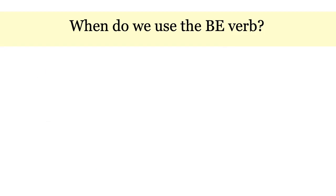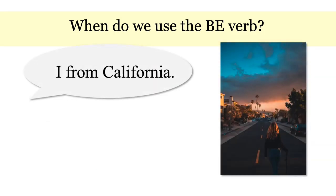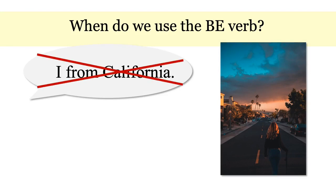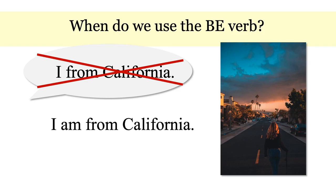Here's one more example. Can you see what is wrong? It is missing a BE verb. What form of BE should go here? AM. I am from California. This is correct grammar.